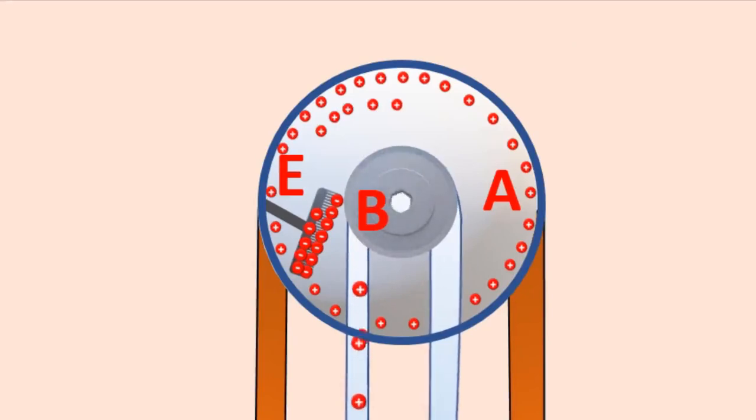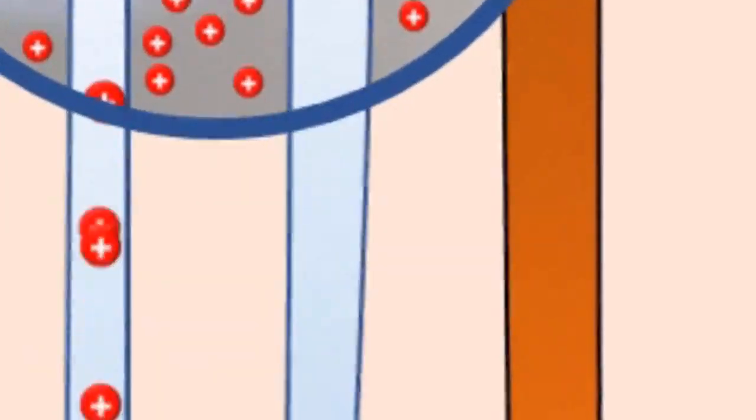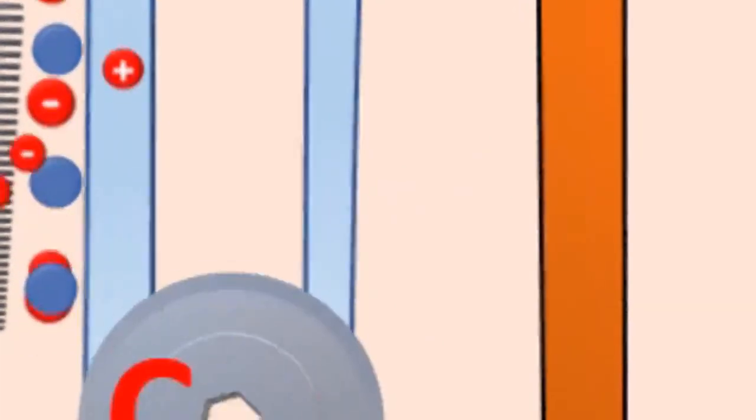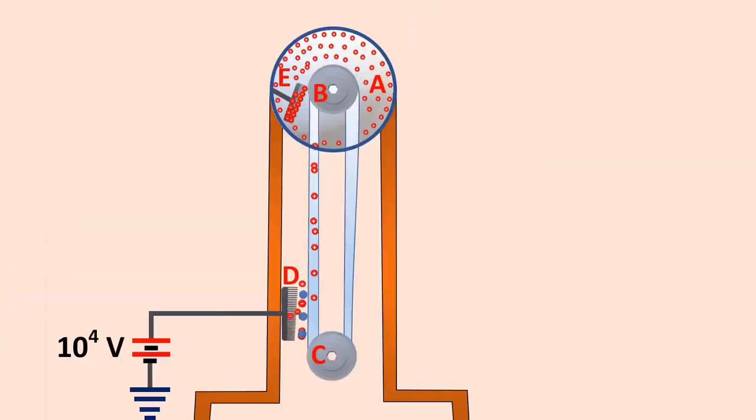At the same time, the negative charges produced due to the corona discharge nullify the positive charges in the belt before it passes over the pulley. When the belt descends, it has almost no net charge. At the bottom, it again gains large positive charge.